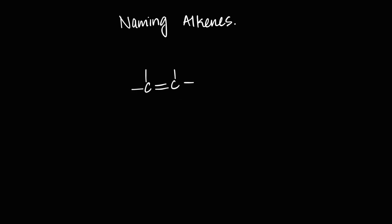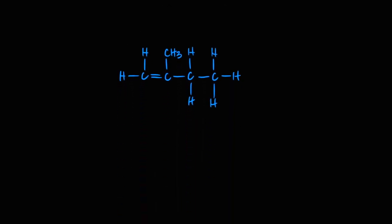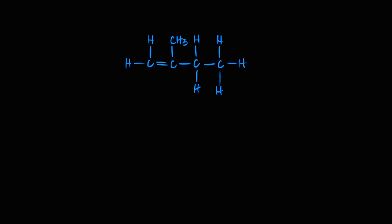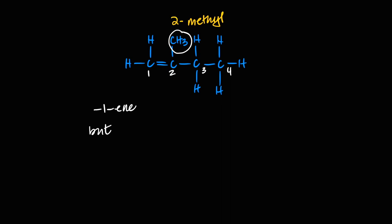Let's look at this molecule. I've got one, two, three, four carbons, there's a double bond and one substituent — a CH₃. If I count from the left, the first carbon-carbon bond is double. If I count from the right, the third carbon-carbon bond is double. So I count from the left to give the smaller number. It's a four-carbon chain — 'but' — the double bond is first — 'but-1-ene' — and the methyl branch is on carbon number two. So the overall name is 2-methylbut-1-ene.